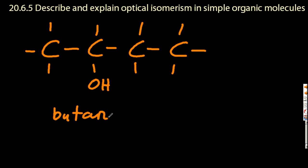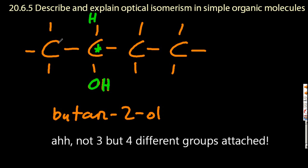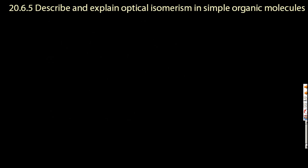So this is butan-2-ol. And you can see that one of the carbons here, I put a star on. And that is a chiral carbon. Because it has four different groups attached. A hydrogen, an OH, a methyl, and an ethyl group. You can also say that the molecule is chiral.